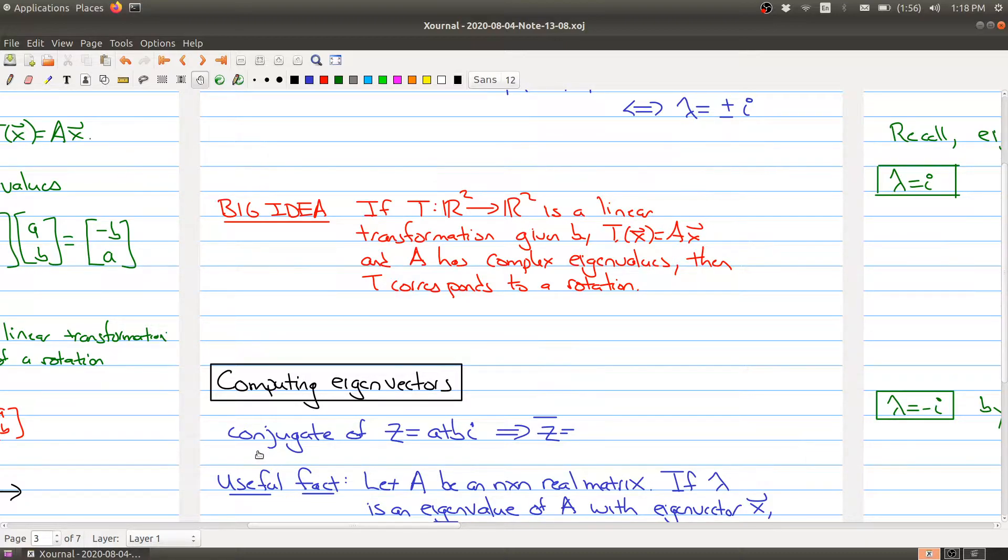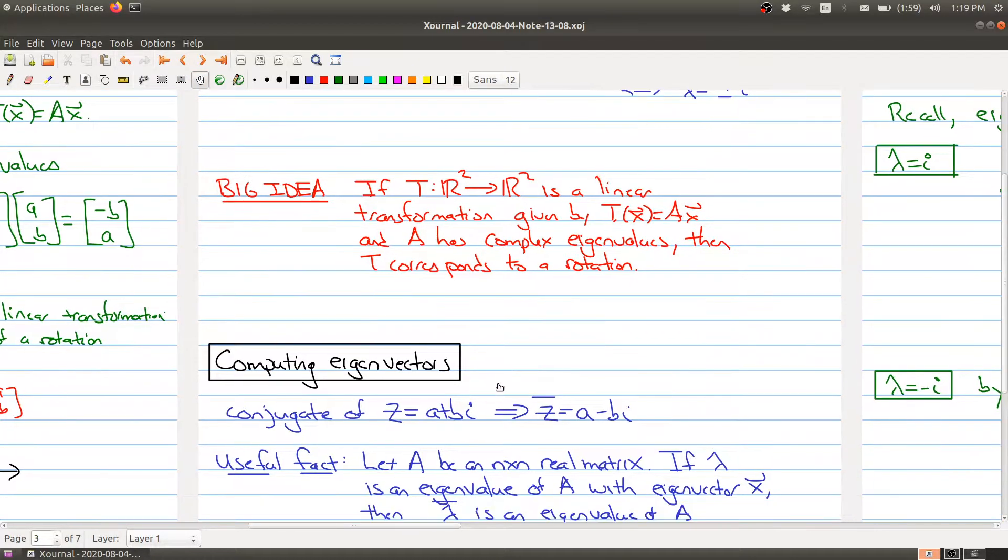Just remember, last class we talked about the conjugate of a complex number. The conjugate of a complex number is the new complex number you get by changing the sign of the imaginary part. So if this had been plus 2, this would become minus 2. If this had been minus 3, this would have been plus 3. You're just changing the sign of the number in front of the imaginary number.